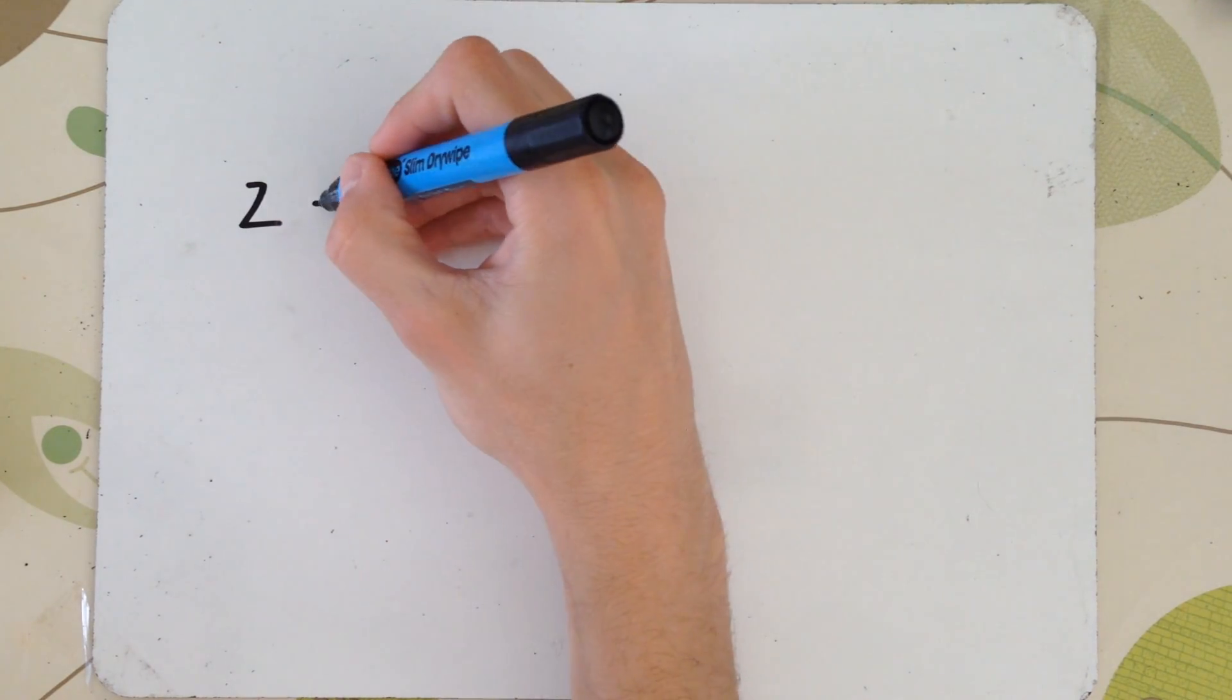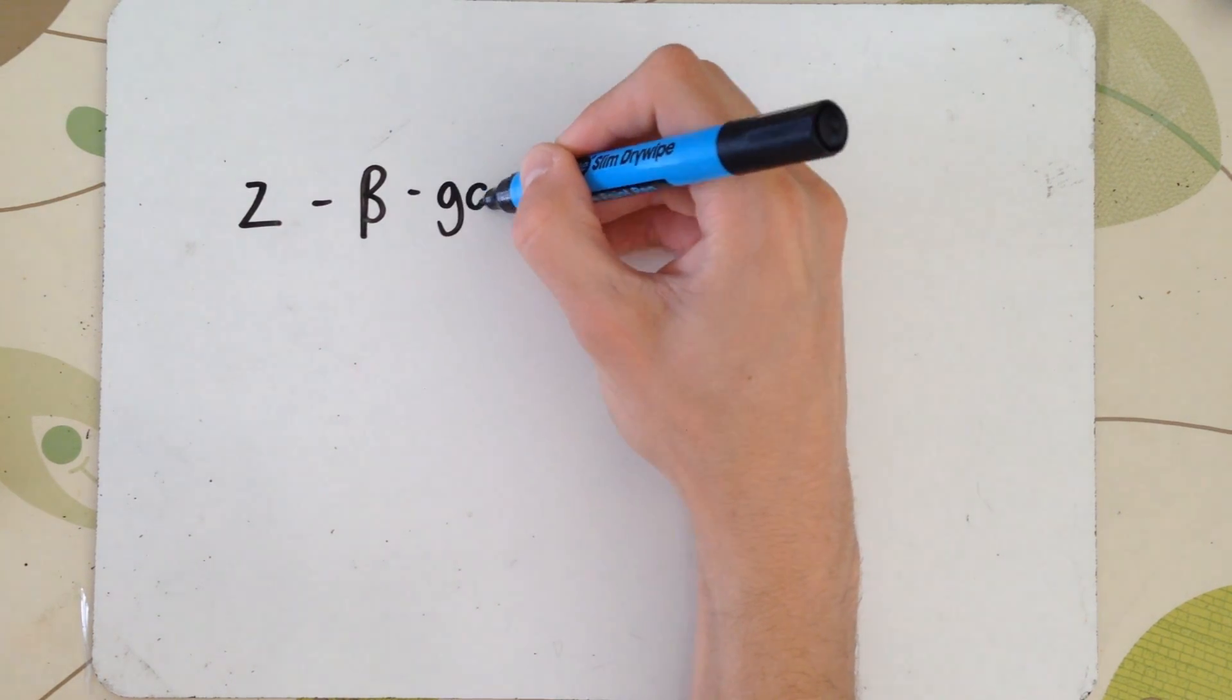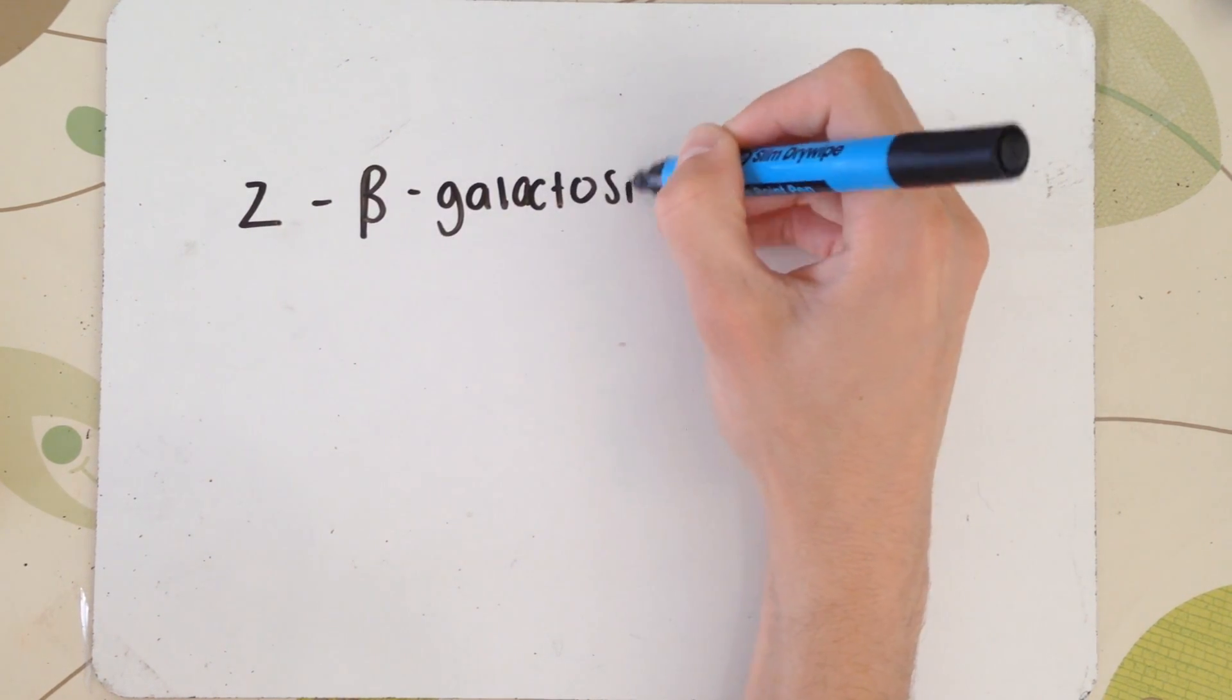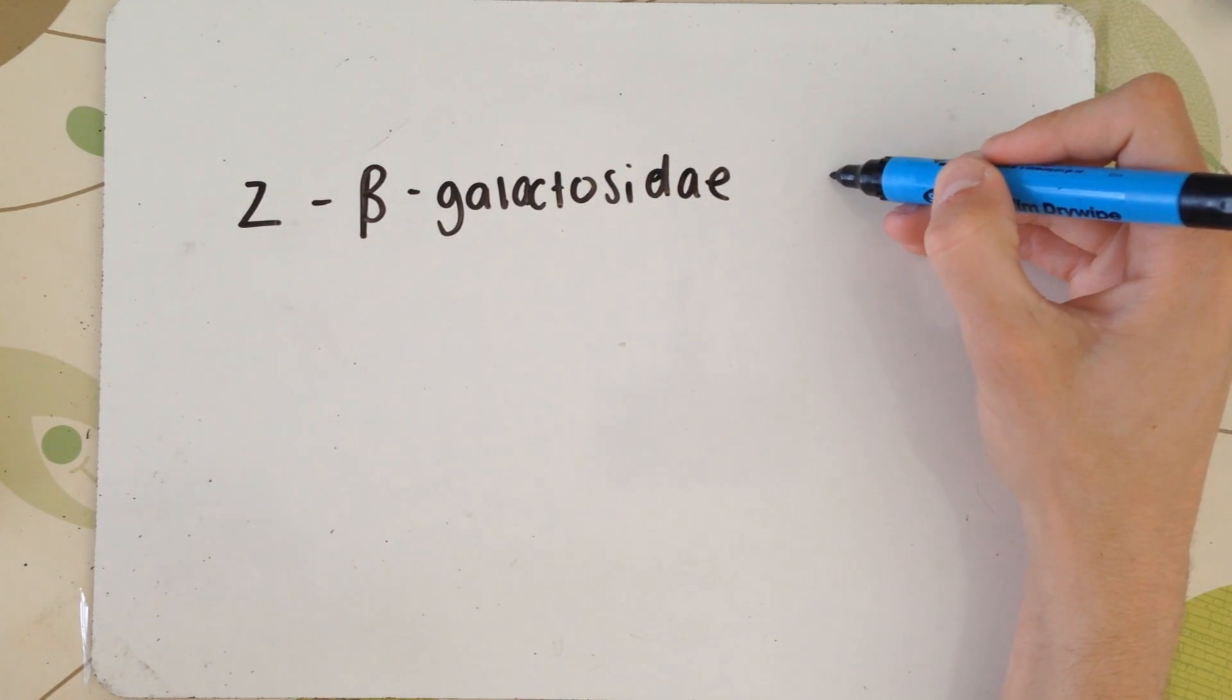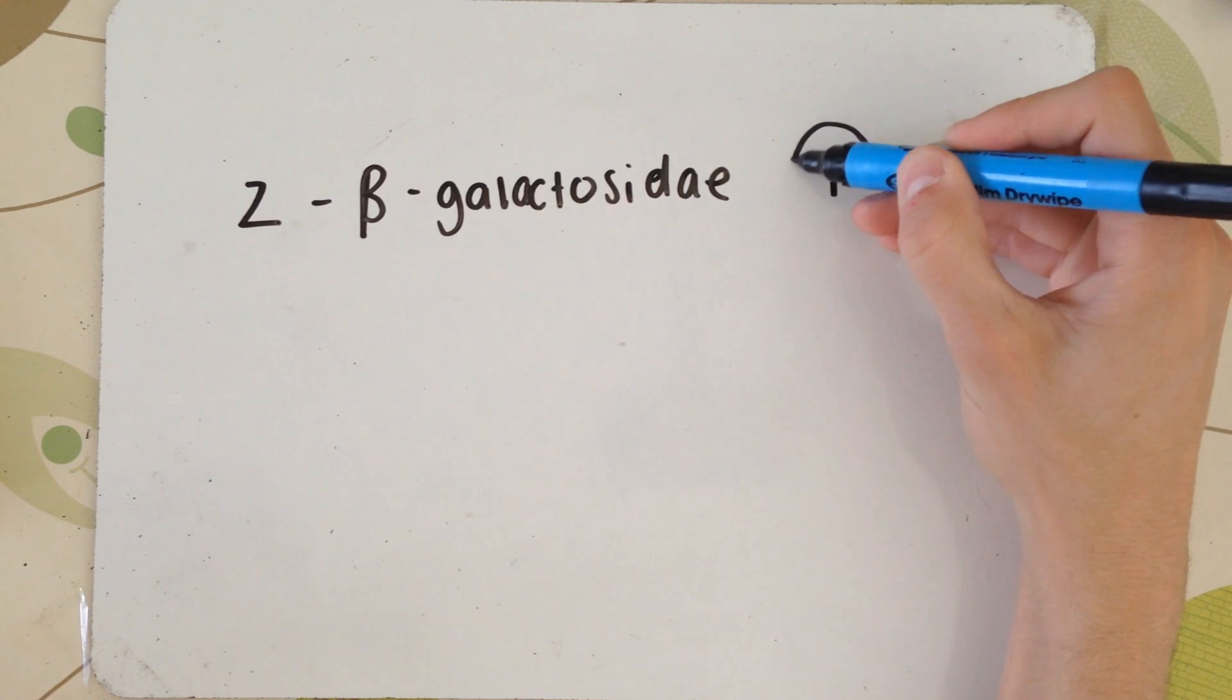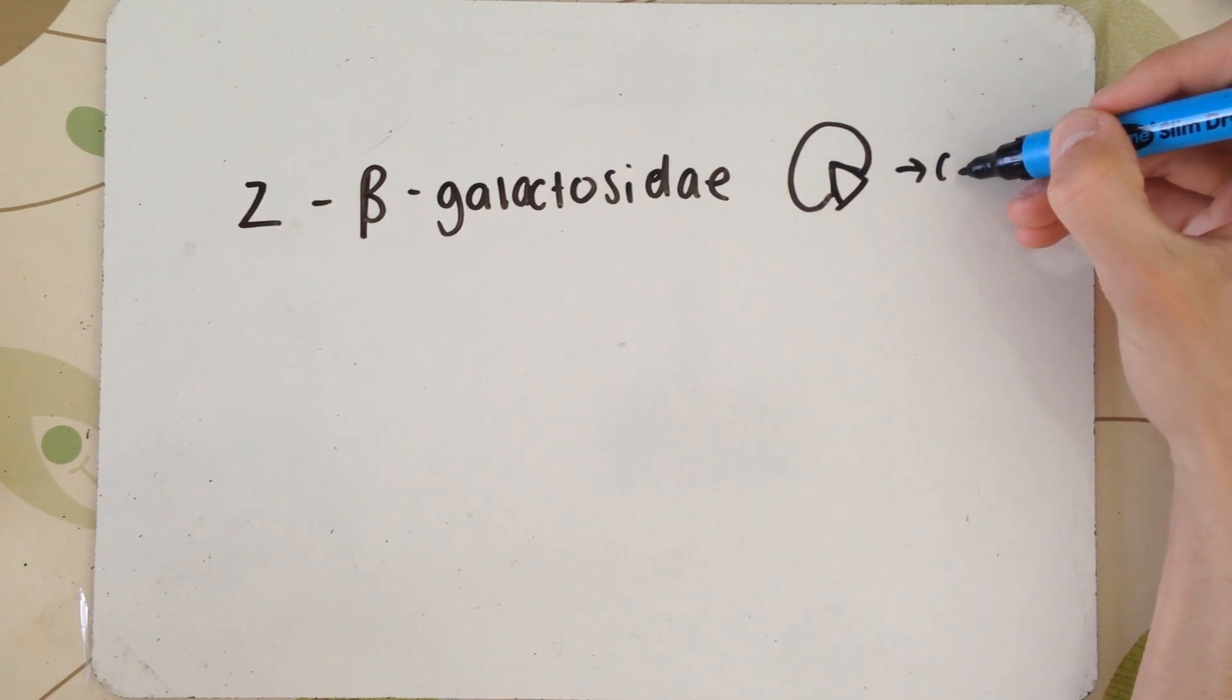So, I'm finally quickly going to talk about what the structural gene Z and Y actually code for. The gene Z is beta-galactosidase. I'm not sure that's how you say it, but it seems like the most appropriate. And as you can see, that's like an enzyme molecule that actually has an active site specific to the complementary shape of the lactose molecule, allowing it to be converted to glucose.